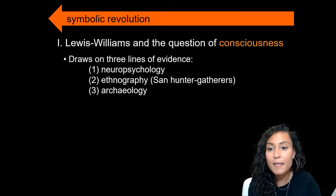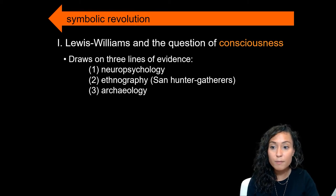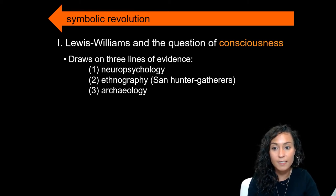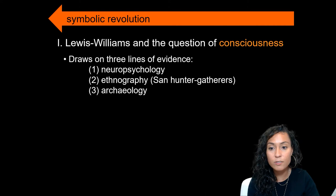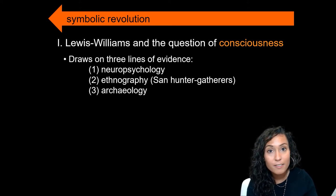In developing an alternative to this conventional model, Lewis-Williams draws on three lines of evidence: neuropsychological, ethnography among San hunter-gatherers in Africa, as well as the archaeological record.